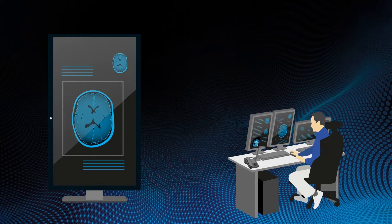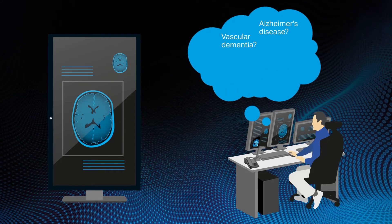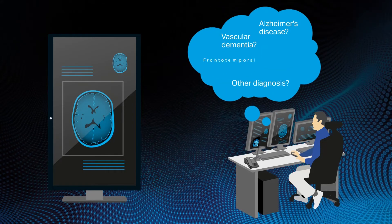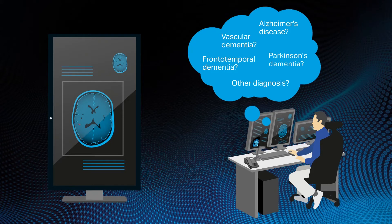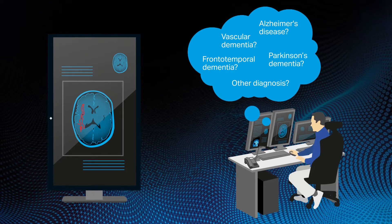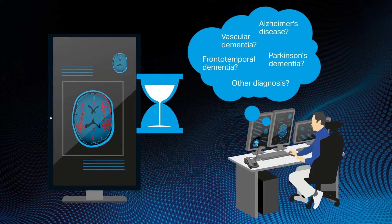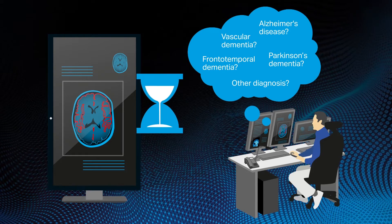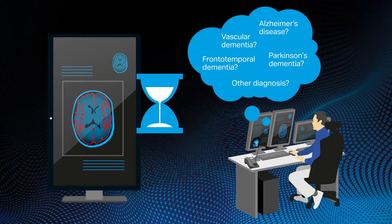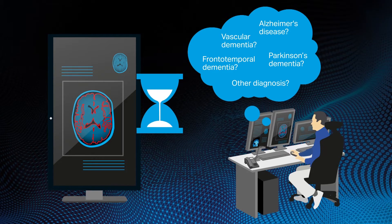For the differential diagnosis of dementia, the reliable evaluation of brain atrophy is essential. Measuring brain volume manually is extremely time-consuming and thus not feasible to incorporate in daily routine.